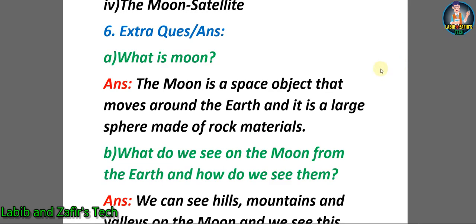Now students let's go through some extra question answers. A. What is Moon? Answer: The moon is a space object that moves around the earth and it is a large sphere made of rock materials.